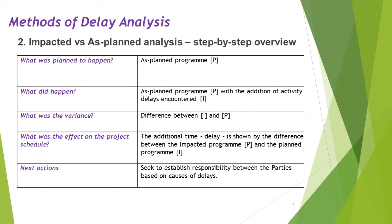Similarly, for Impacted As Planned: what was planned to happen? Again, the planned program, P. What did happen? This is the as planned program with the addition of activity delays encountered. What was the variance? The difference between I (impacted) and P (planned). What was the effect on the project schedule? Not necessarily the difference between I and P. The additional time delay is shown by the difference between the impacted program and the planned program. Next action: seek to establish responsibility between the parties based on the causes of the individual activity delays.